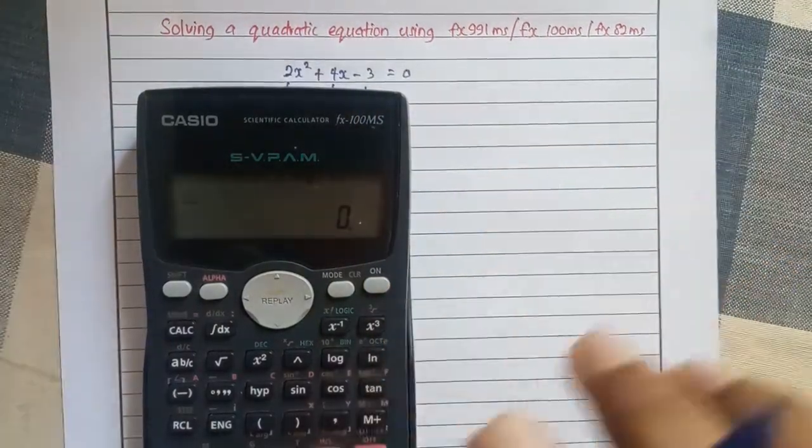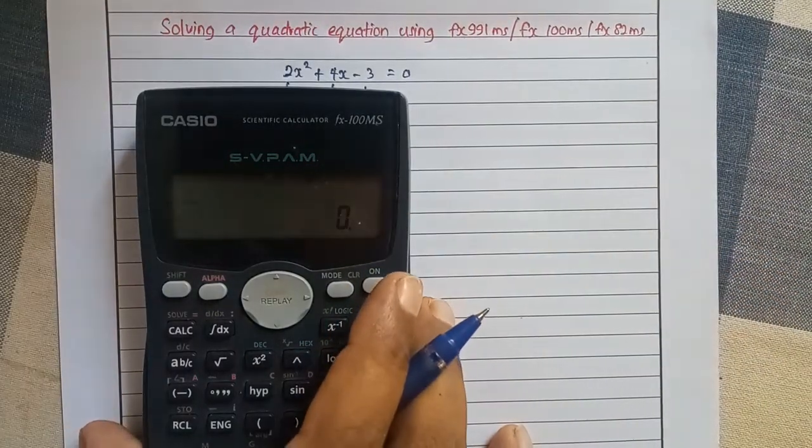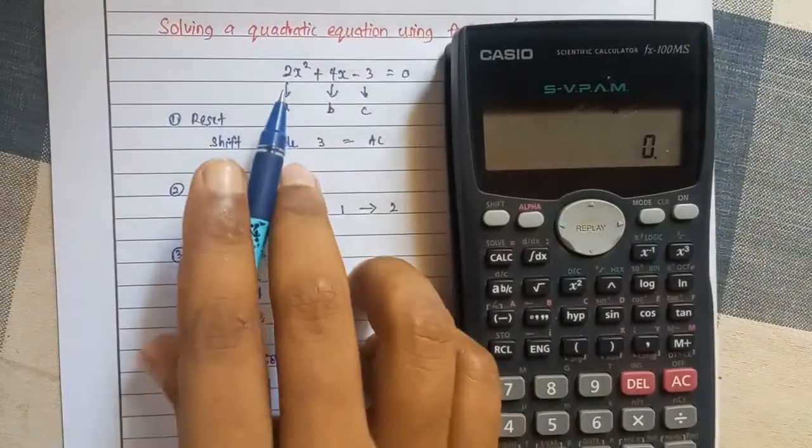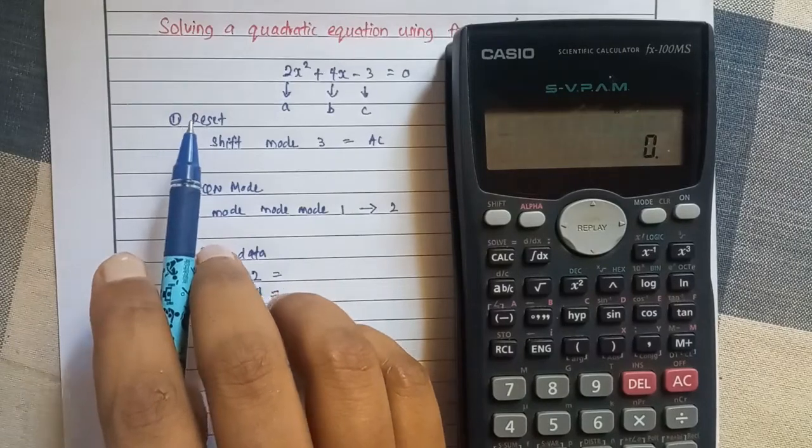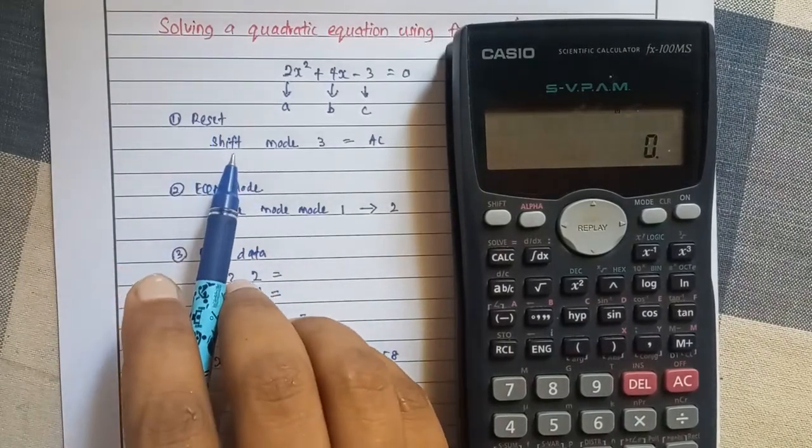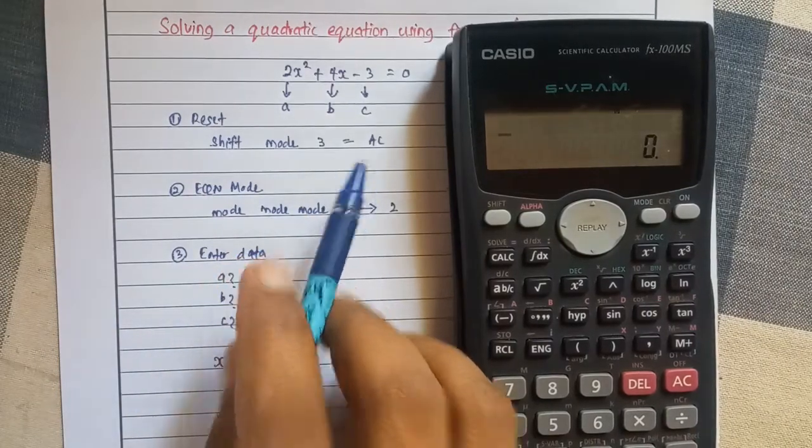Now I'm going to show you how we can solve this quadratic equation using our scientific calculator. In order to solve this quadratic equation, the first thing you need to do is reset your calculator memory. For that, you need to press shift, then mod, then number 3, equal, AC.